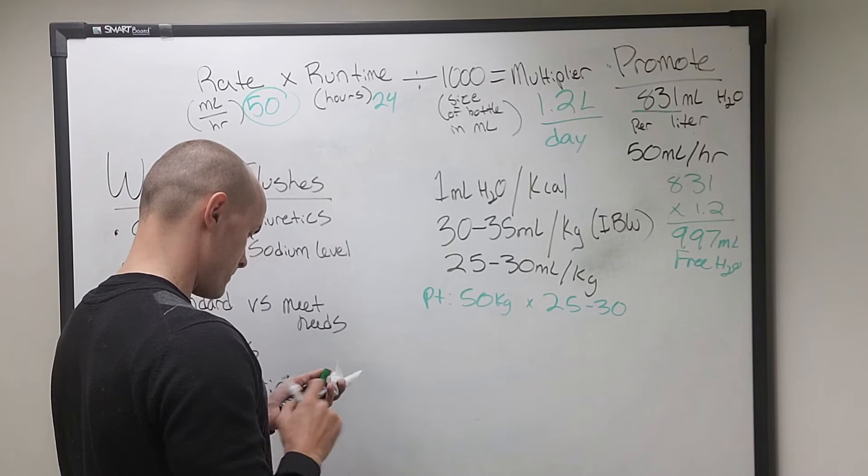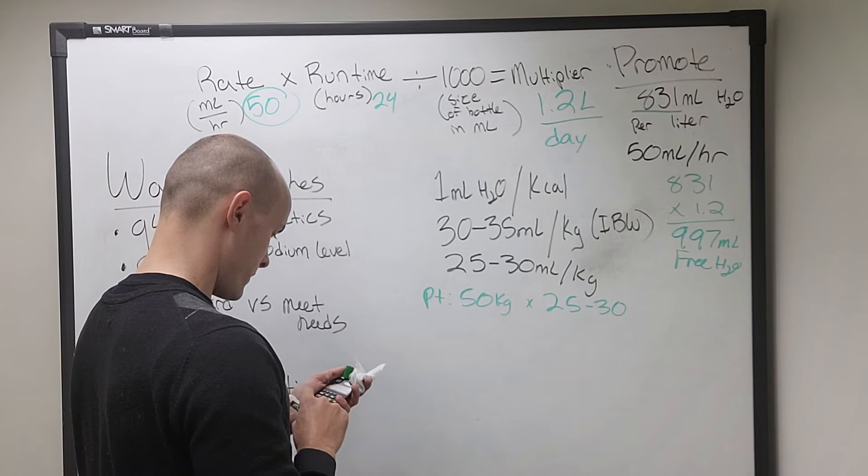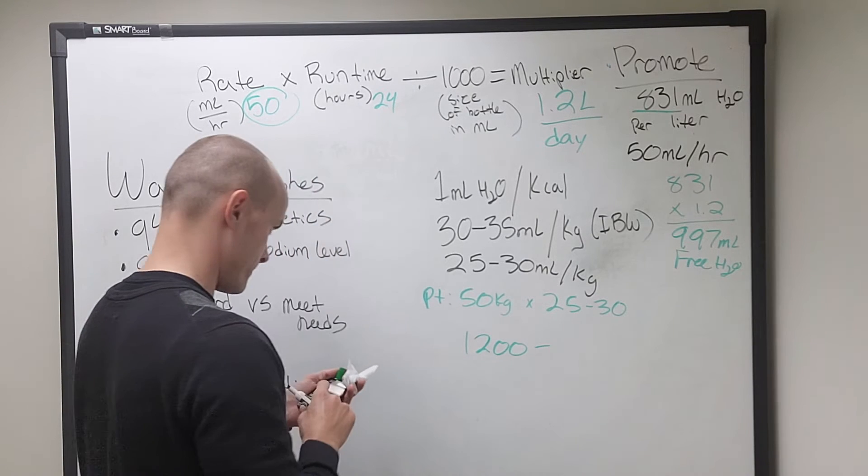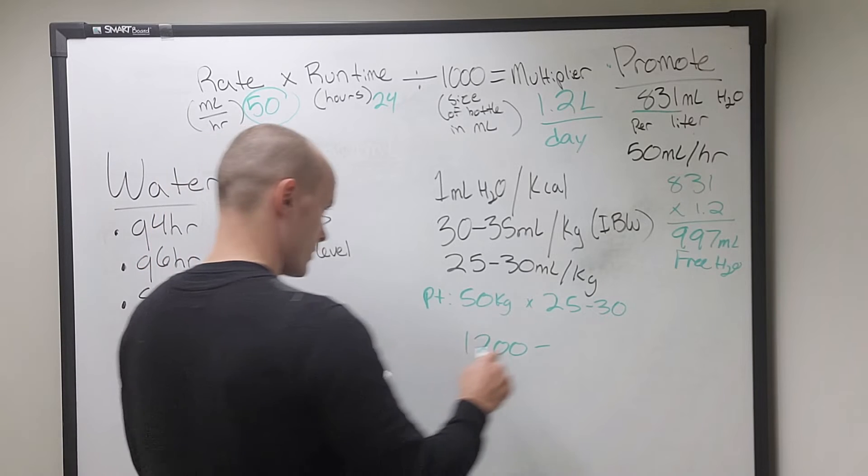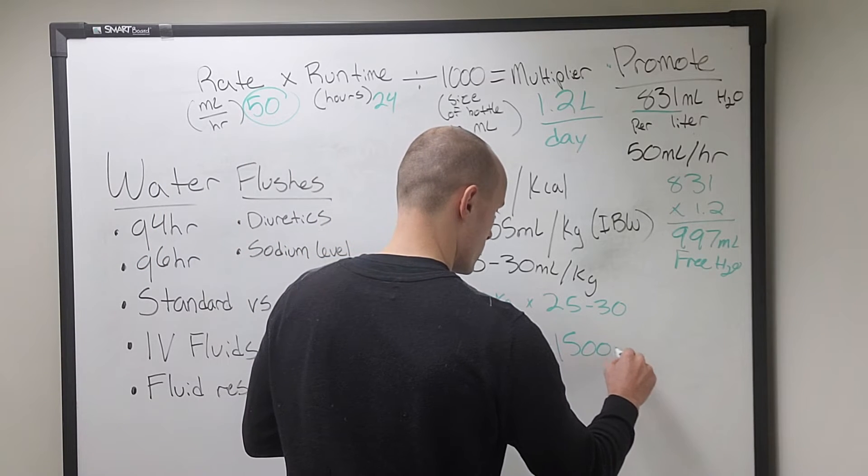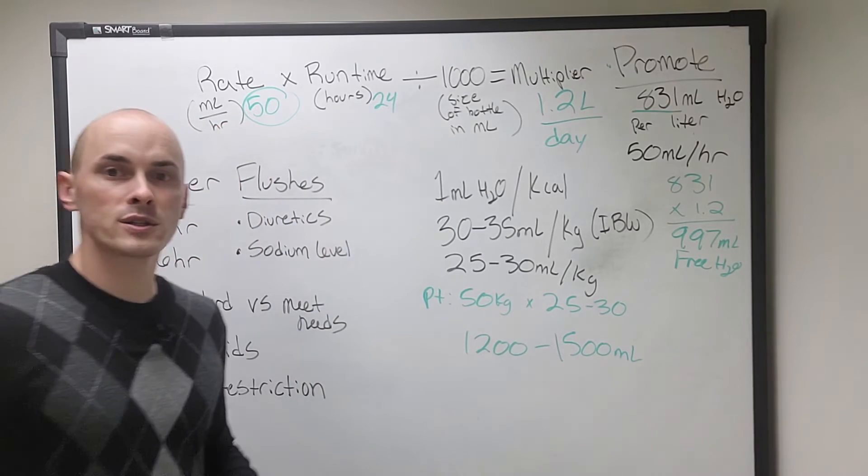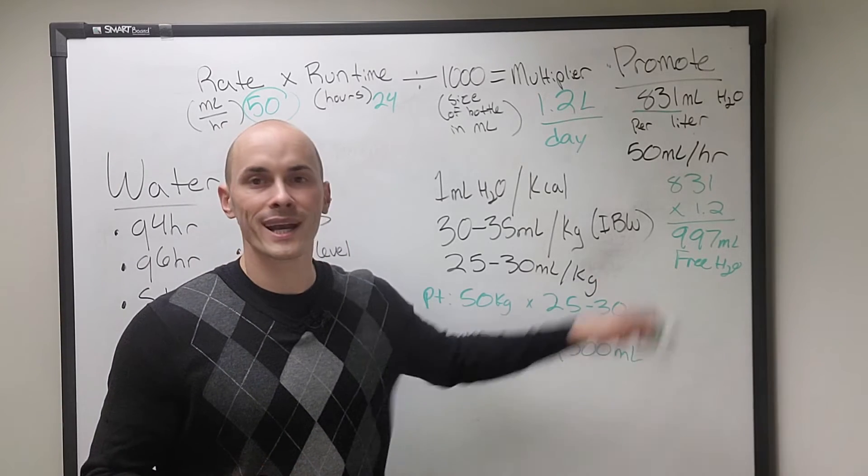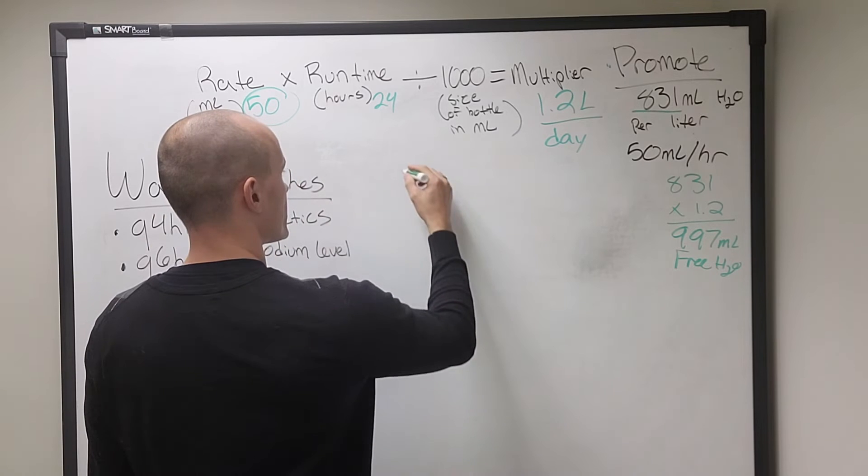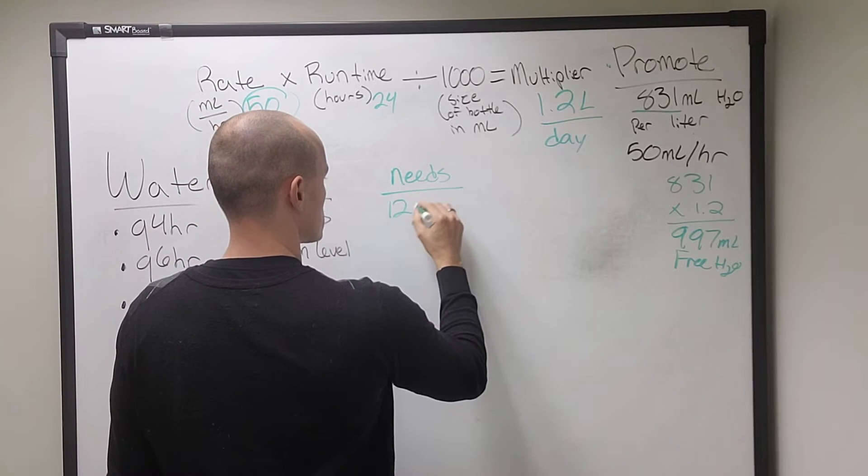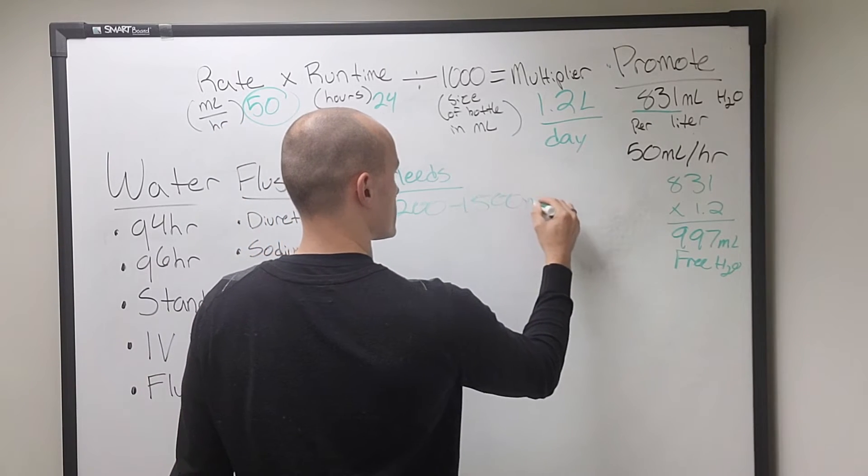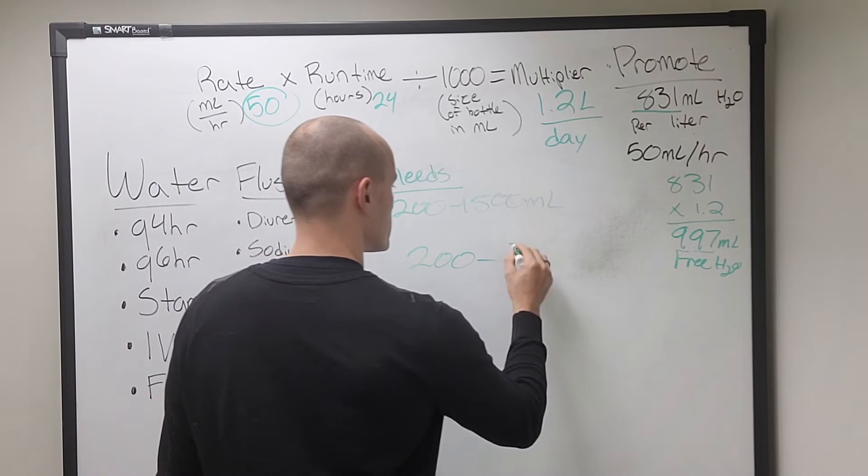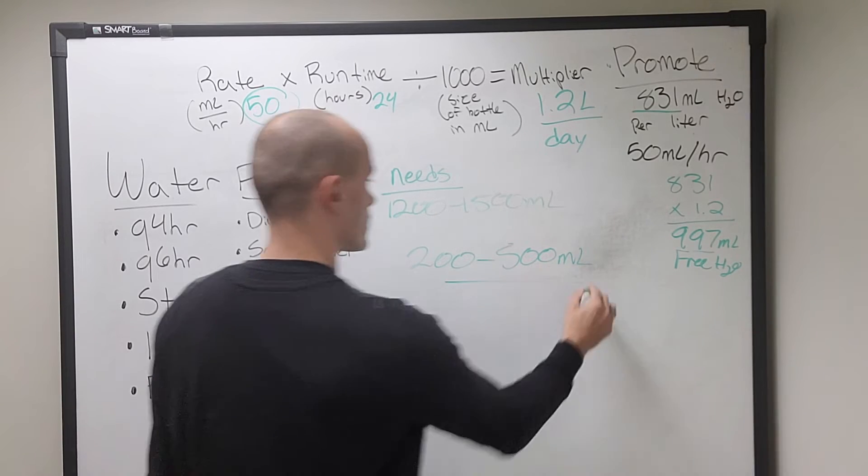That's going to give us 50 times 25, 1200 to 1500 milliliters per day. So what we do is we subtract from their needs what they're getting from the formula. So we said our patient needs 1200 to 1500 milliliters. They're getting right around a thousand. So they need somewhere between 200 to 500 mils. This is what's left.